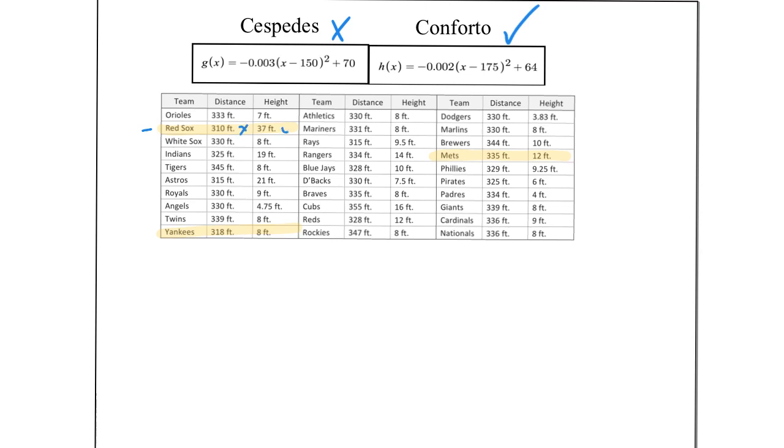So the important thing is noticing that when we talk about distance, that's our X value, that's the horizontal distance, whereas height for the Red Sox here, it's 37, represents our Y or our H of X value.